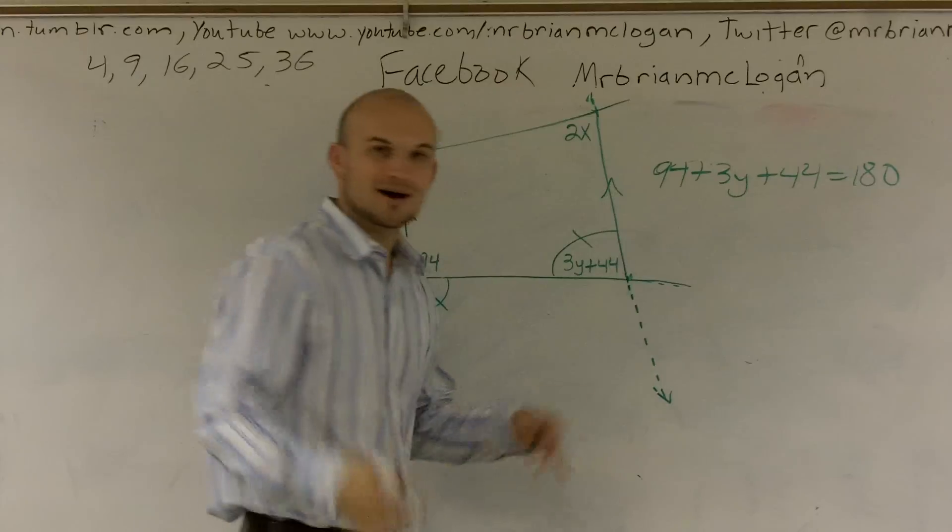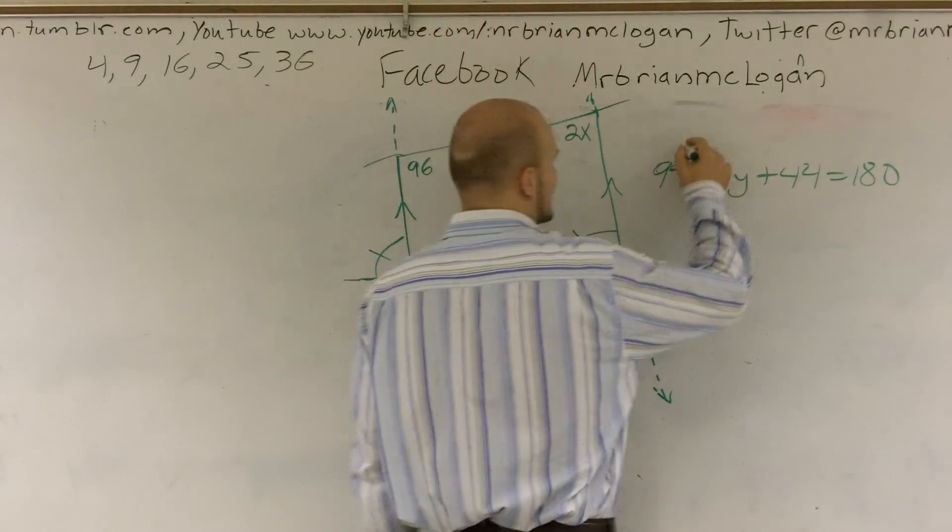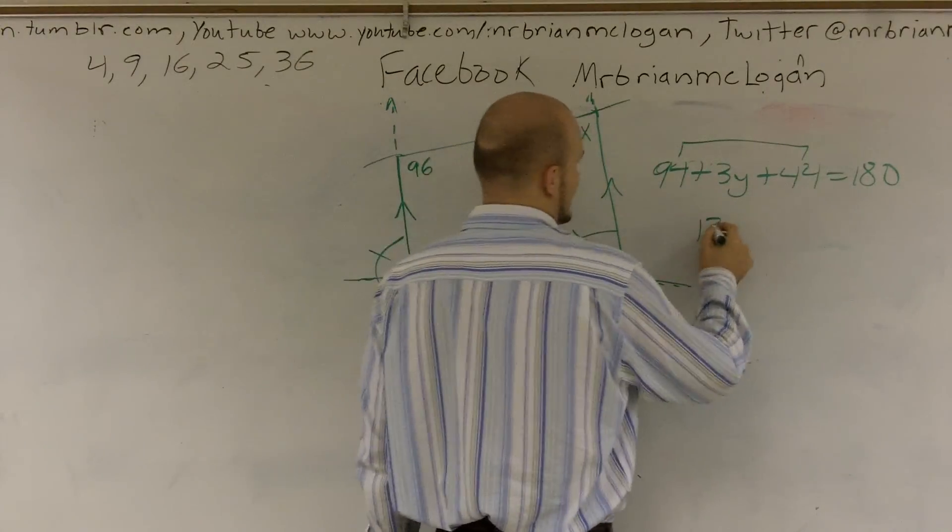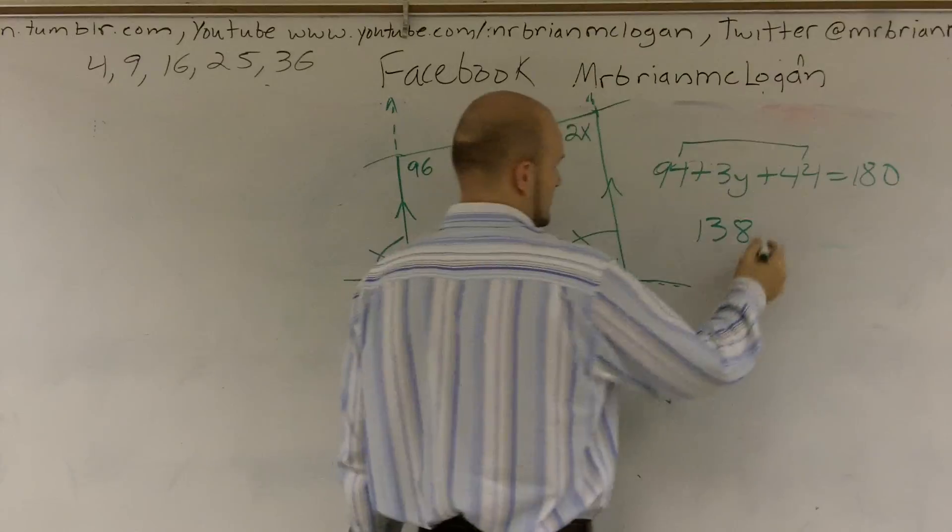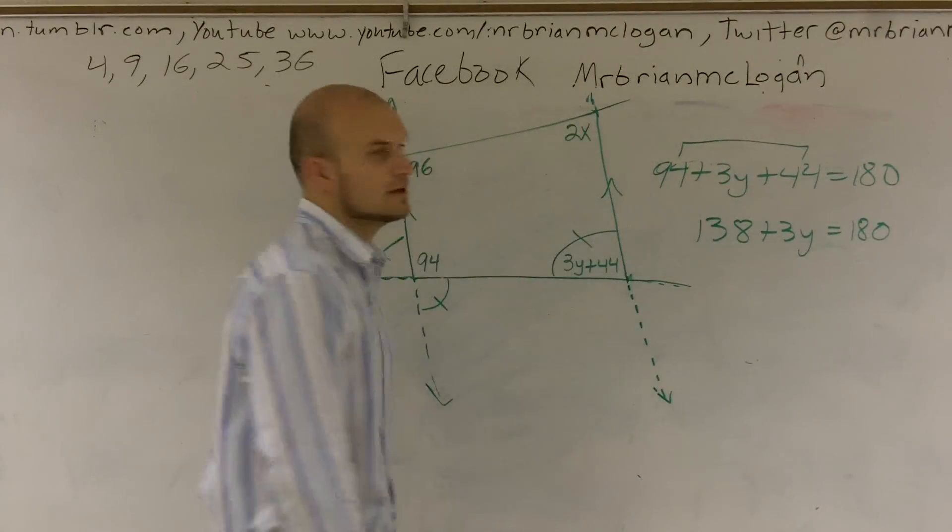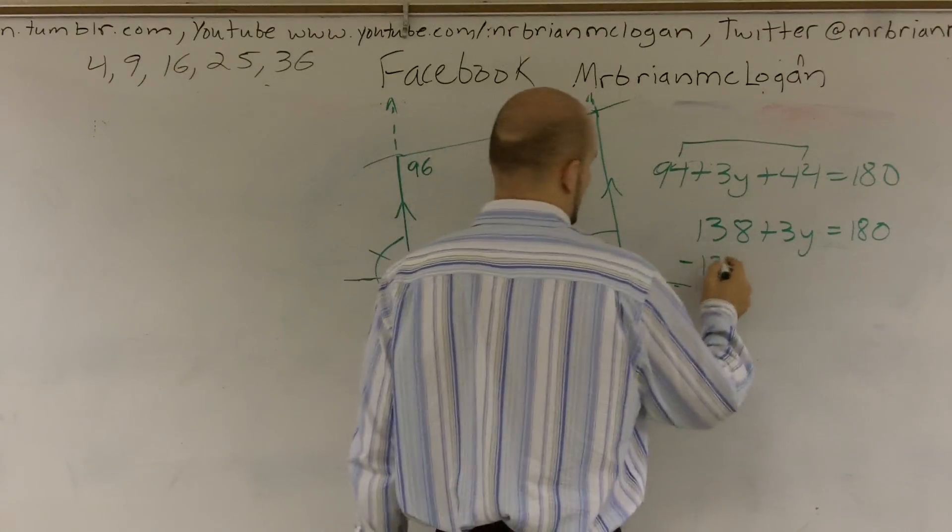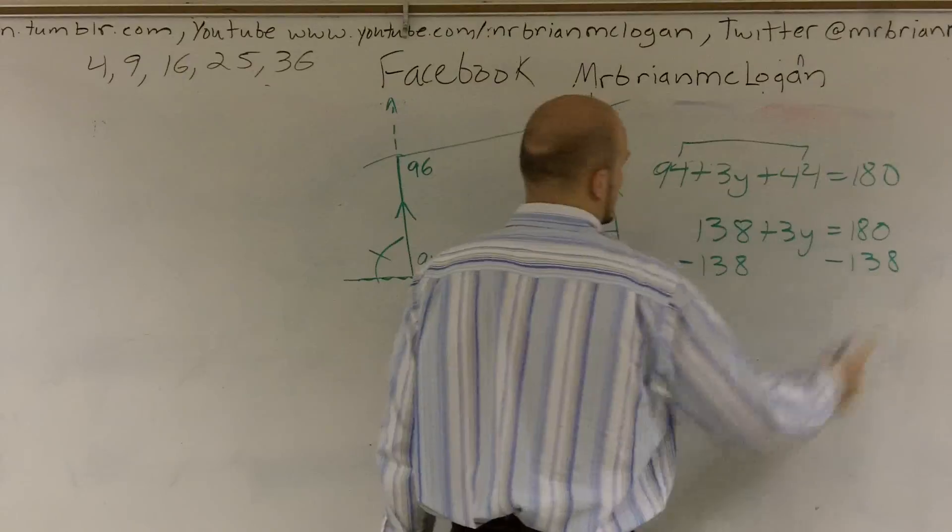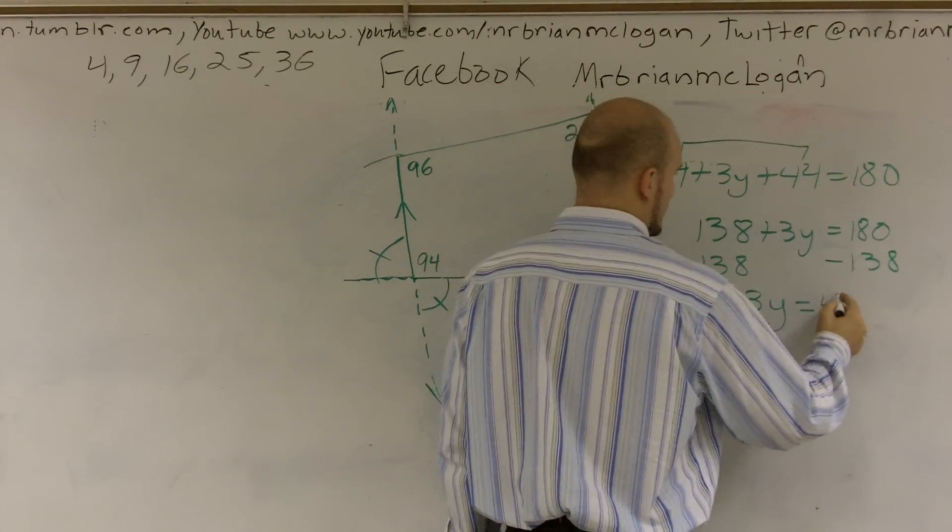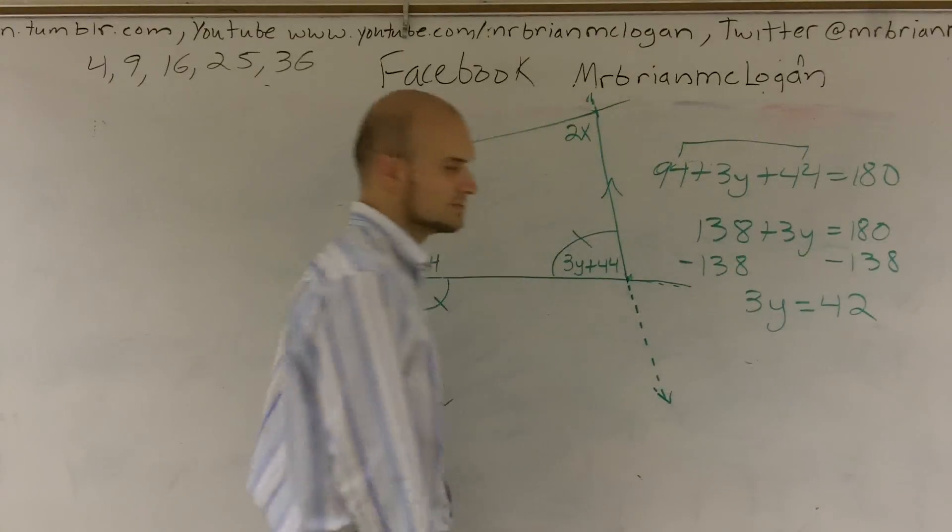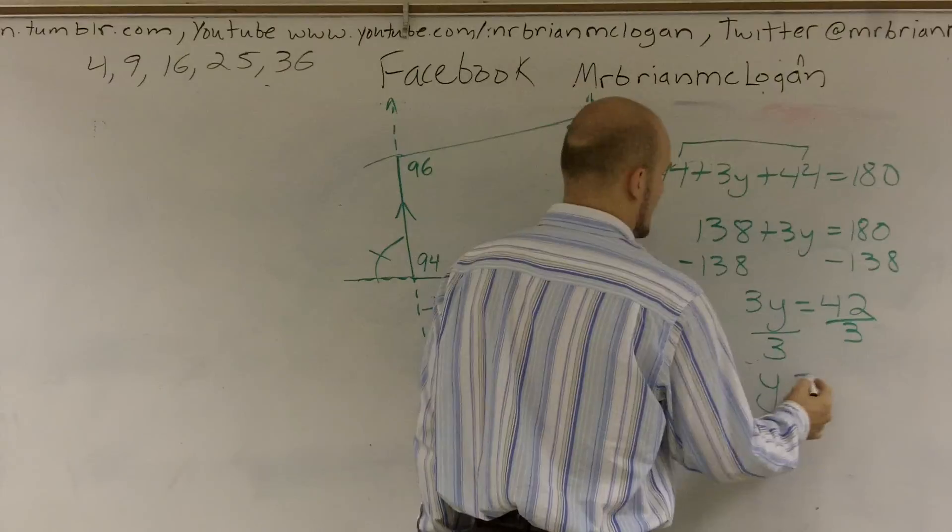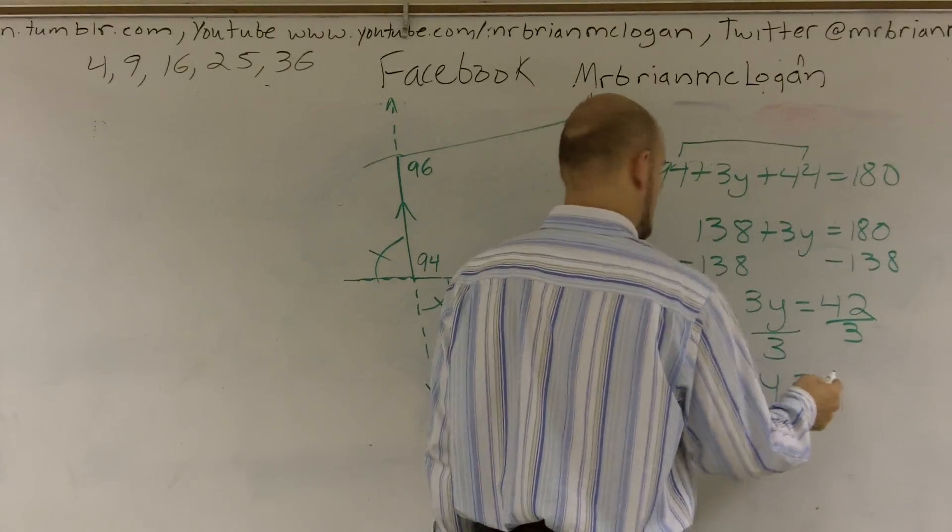So subtract 138. Now I get 3y is going to equal 42. Now I divide by 3. Y is going to equal... let's see, 3 goes into 30 10 times with a remainder of 4, so it's going to be 14.